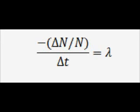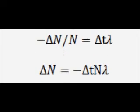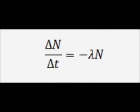I'm going to rearrange this equation using basic algebra to get an equation in terms of n, because I want to get rid of delta n over delta t. You'll notice that this is actually a derivative, so this is the perfect form to put it in. What you can see is that this is a separable first-order differential equation, so I'm going to separate the variables by dividing both sides by n.